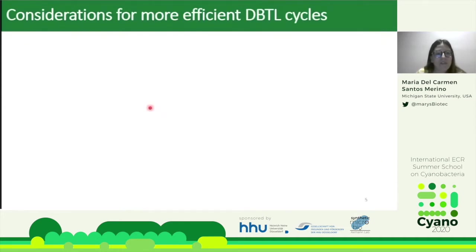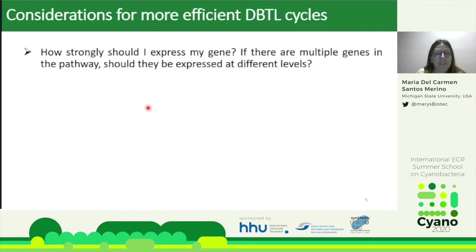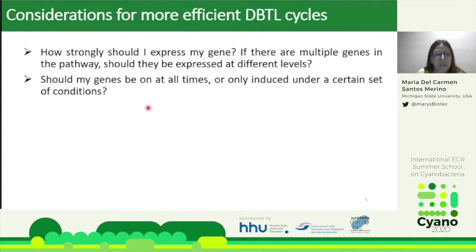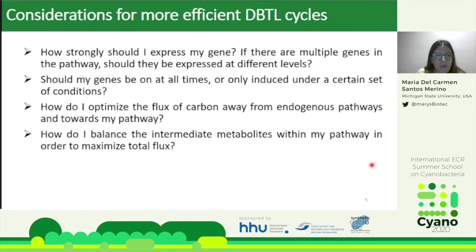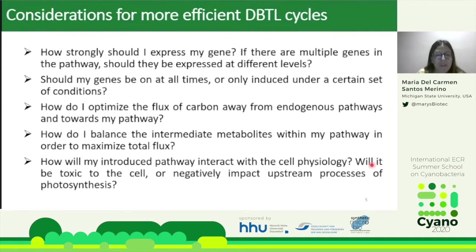What are the considerations for more efficient design-build-test-learn cycles? Before starting these cycles, we can ask different questions to decrease the number of cycles needed: How strongly should I express my gene? Should multiple genes be expressed at different levels? Should genes be on all the time or only under certain conditions? How do I optimize carbon flux through my pathway, balance intermediate metabolites, and how will the introduced pathway interact with cell physiology — will it be toxic or negatively impact photosynthesis?